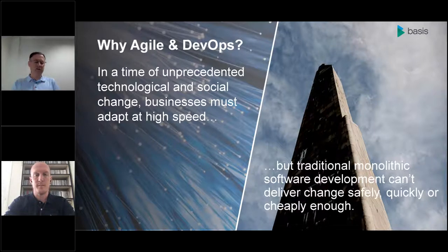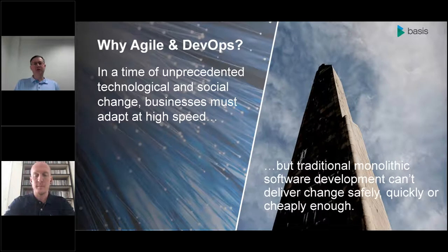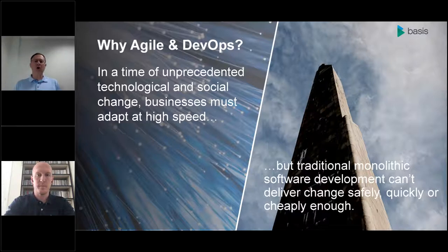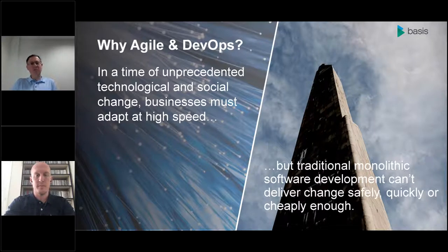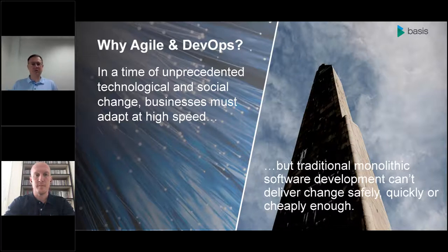Agile is a methodology that came to be in order to support a much more iterative, faster delivery pace and tempo, specifically designed around the kinds of programming and tooling we see in distributed environments like Windows and Unix. DevOps then became the automation and tooling behind it. Ultimately, why both became a thing is software developers looked for a way to become responsive to their businesses — delivering with high quality on a much more frequent basis. It came down to time, cost, and quality.